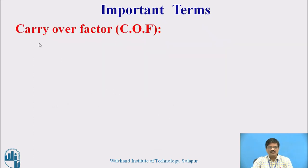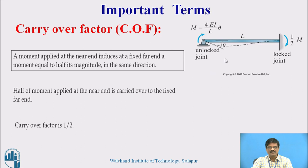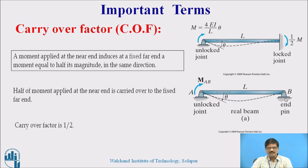Let us look at another term: carry over factor. Whenever a moment is applied to one end, some fraction of the moment is transferred to the opposite end. A moment applied at the near end induces a fixed far end moment equal to half its magnitude in the same direction. So when a moment is applied here, half the moment is transferred to the opposite end — you can see half M. This transfer only takes place if the opposite end is fixed; otherwise it does not. We call this the carry over factor, which is one-half. In the second case, if the opposite end is pin or hinged, no moment is transferred, so the carry over factor is 0.